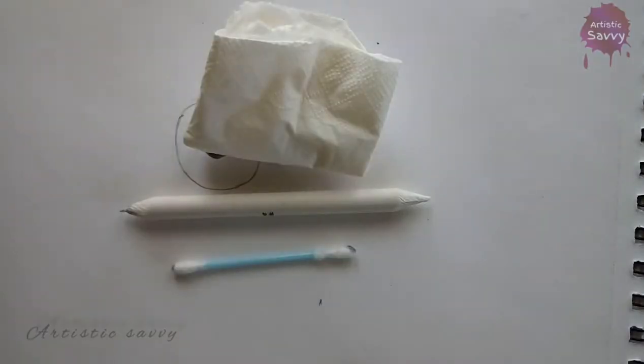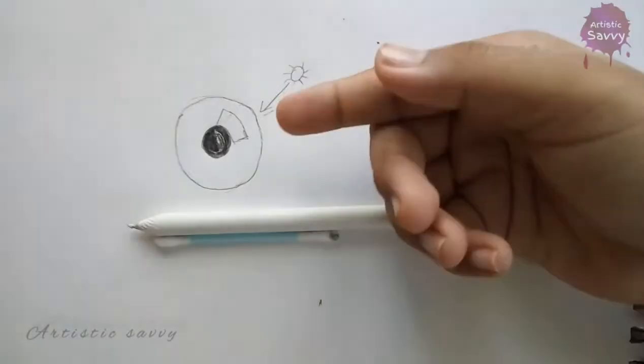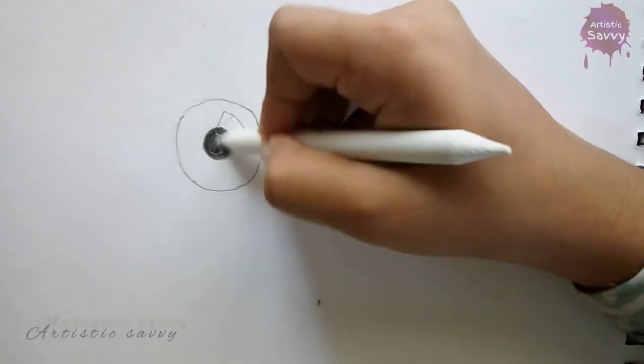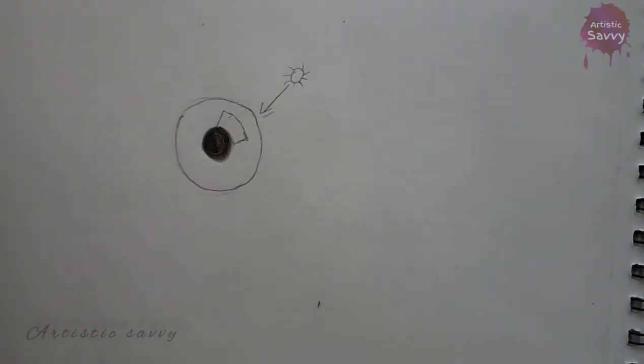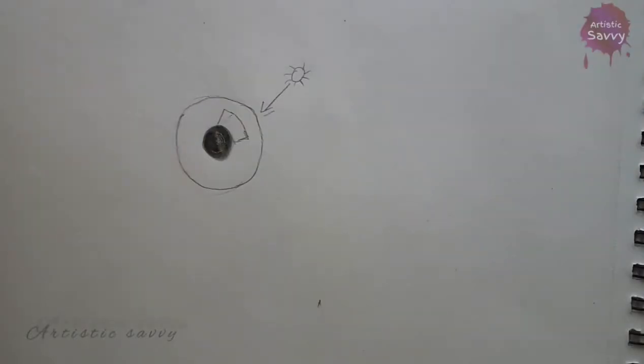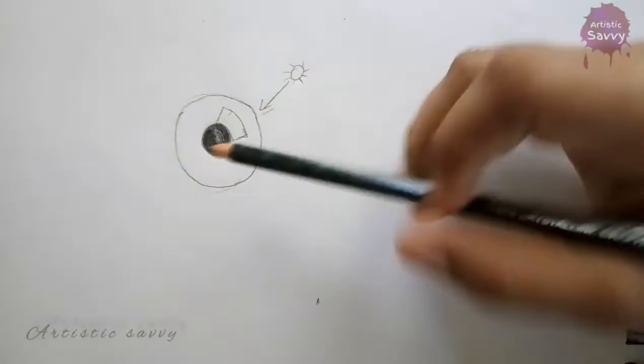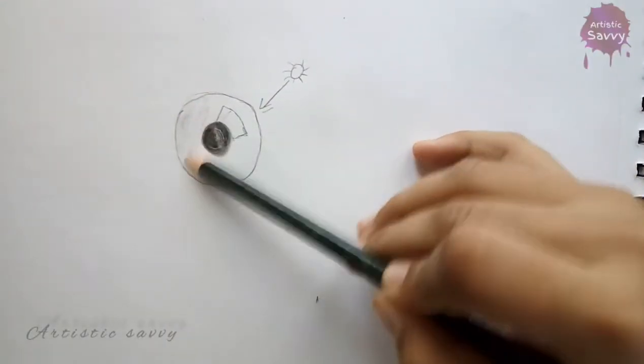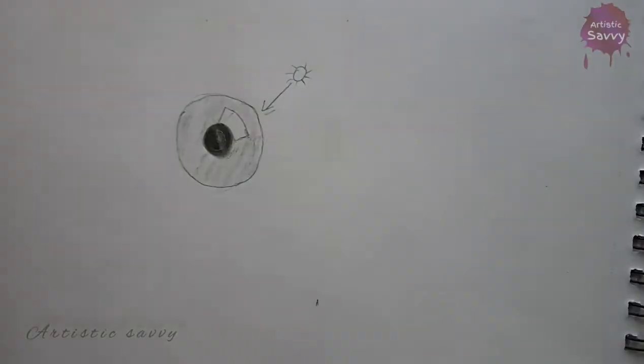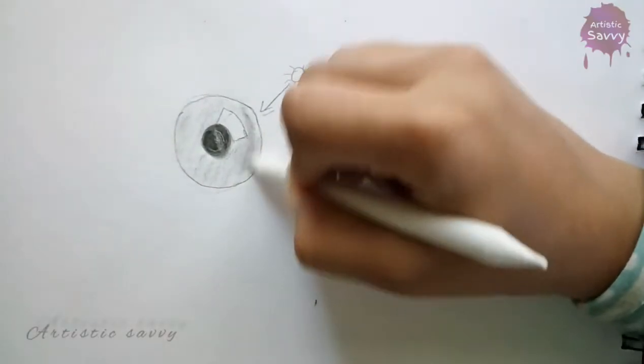With a lighter shade, you can either use your blending stump, tissue paper, hand, cotton swab, or a cotton cloth to blend it. Now I'm going to do basic shading. I'm using an HP pencil and then blending it.